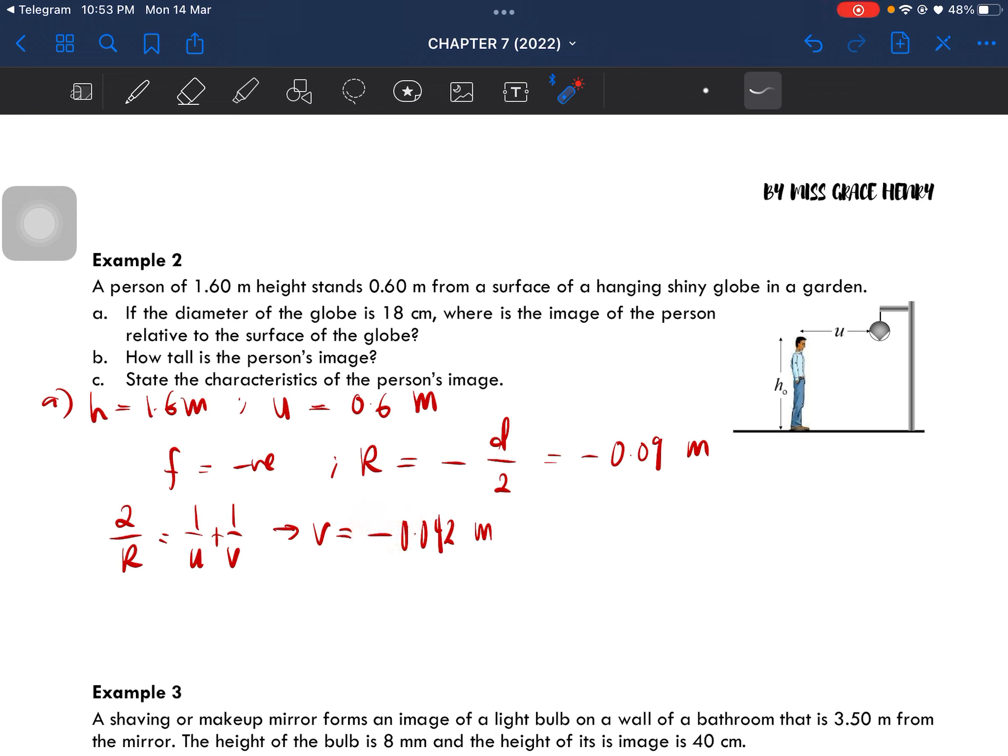How tall is the person's image? We are gonna use the magnification formula, which is height of the image divided by height of the object equal to negative V over U. From here, we can then get the image object to be equal to 0.112 meter.